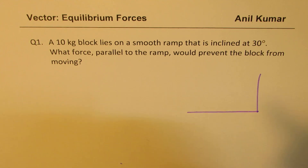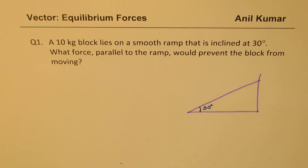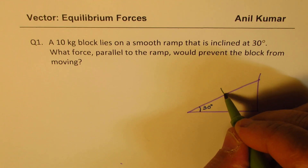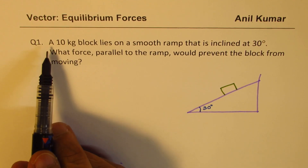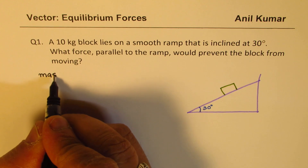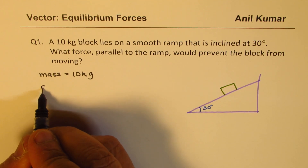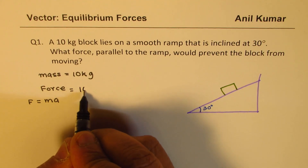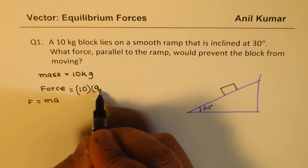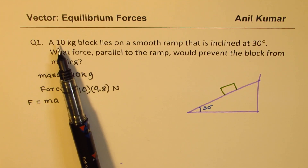The situation is like this: we have a ramp at an angle of 30 degrees with a block on it. We are given the mass of the block. It's very important to understand the units — a 10 kg block means the mass is 10 kg. Whenever there is a mass, we need to convert it to force using F = ma, so we multiply by 9.8 to get the force in Newtons.